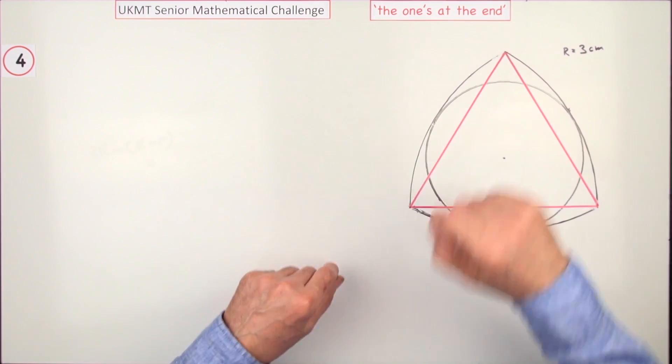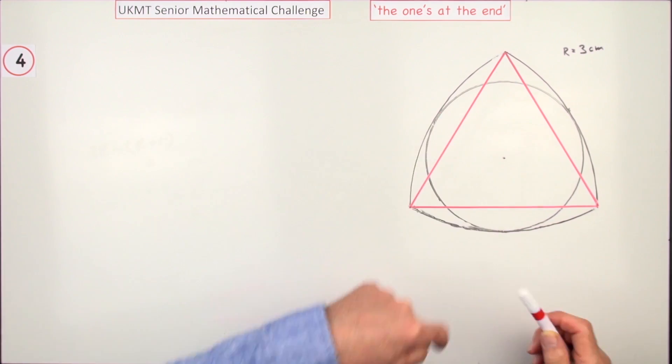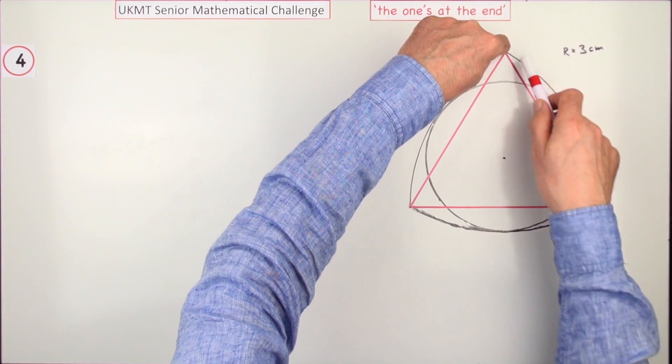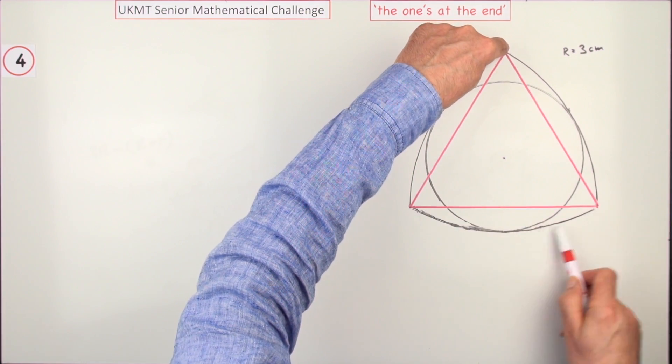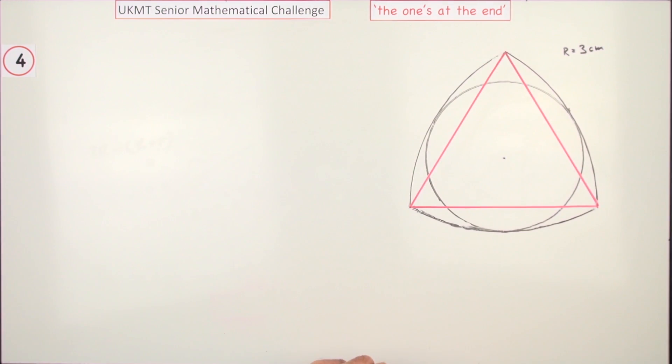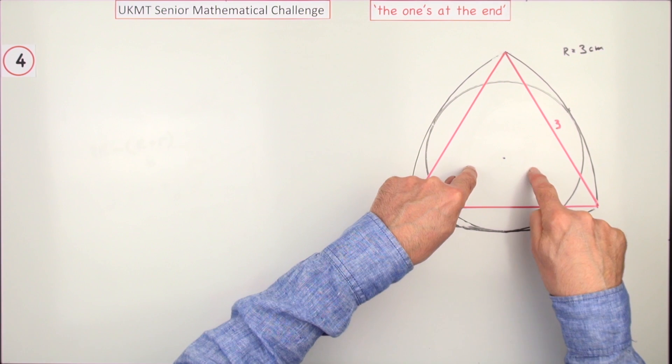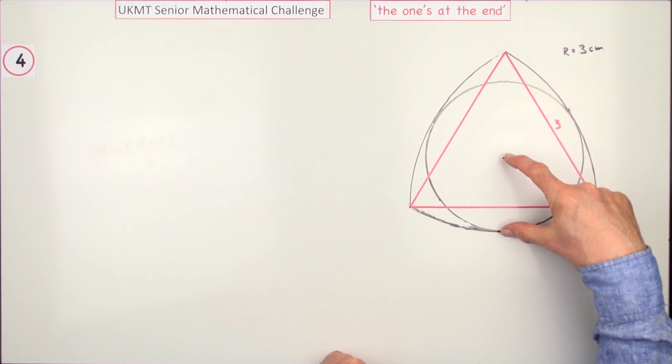There's the equilateral triangle. Since the radius is three from this vertex, each of the sides of that triangle is 3 centimeters. Now to get the area of this circle, I want this distance here.